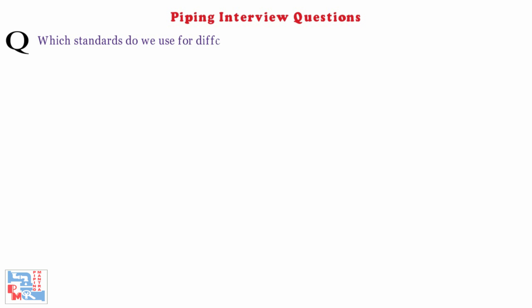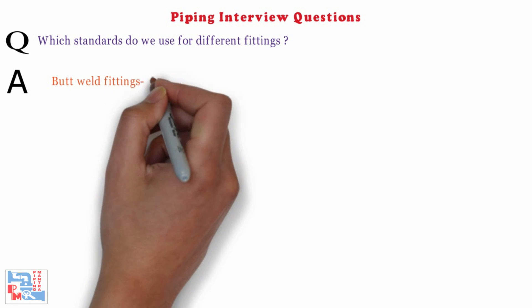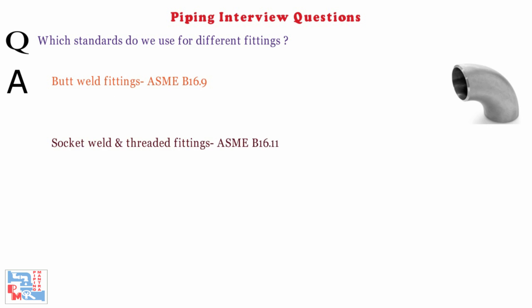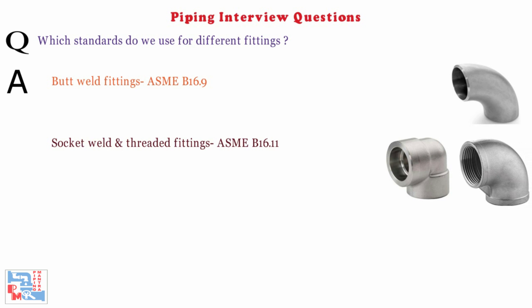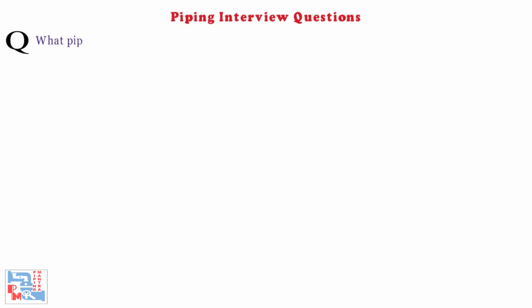Next: which standards do we use for different fittings? For butt weld fittings, ASME B16.9 is used. For socket weld and threaded fittings, we use ASME B16.11. For swage fittings, we use MSS SP97.